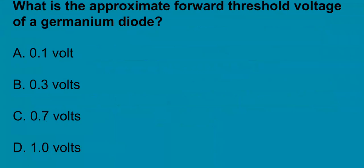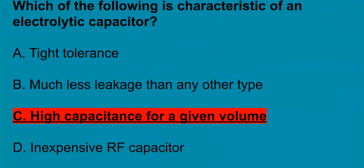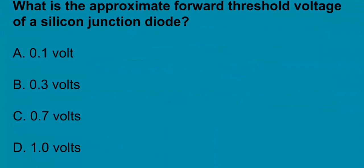G6A03, what is the approximate forward threshold voltage of a germanium diode? 0.3 volts. G6A04, which of the following is characteristic of an electrolytic capacitor? It's going to be high capacitance for a given volume. G6A05, what is the approximate forward threshold voltage of a silicon junction diode? It's going to be 0.7 volts.